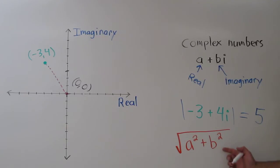That makes it really quick. We can see here, negative 3 squared is 9 plus 4 squared is 16. 9 plus 16 is 25. The square root of 25 is 5. So we could have done it that way as well.